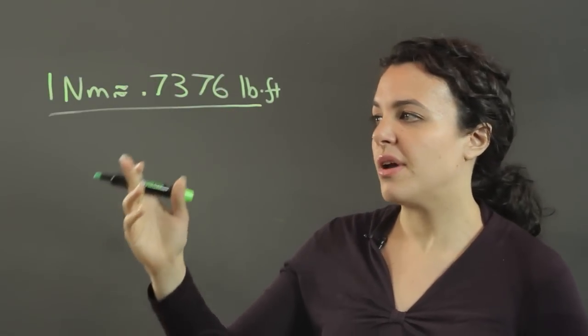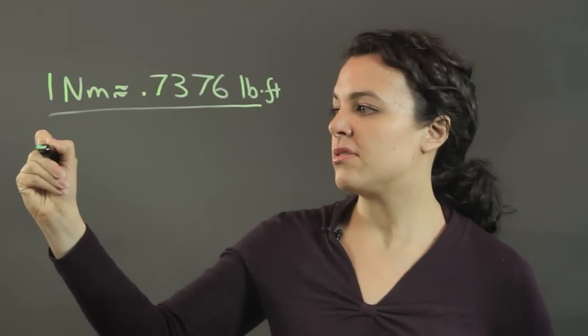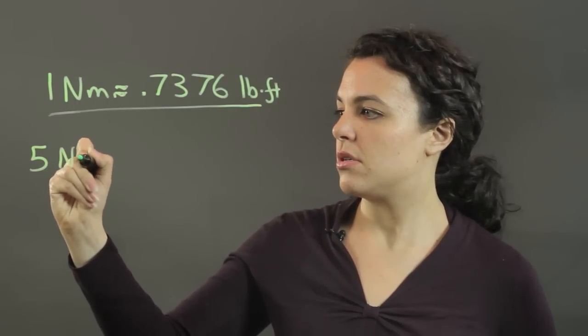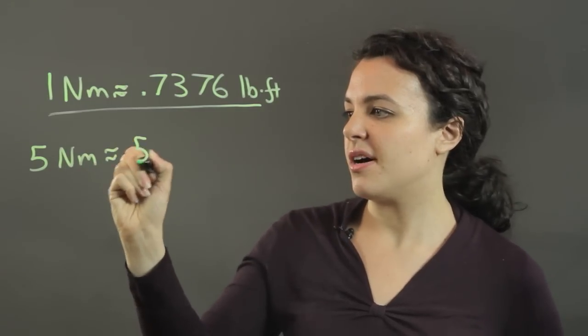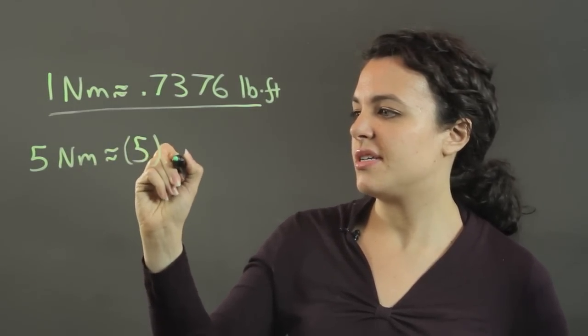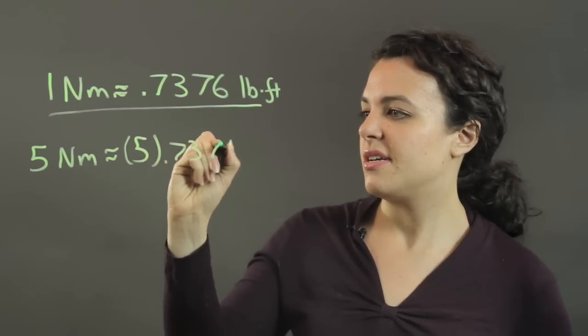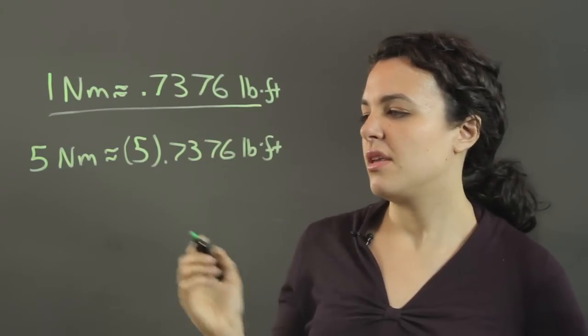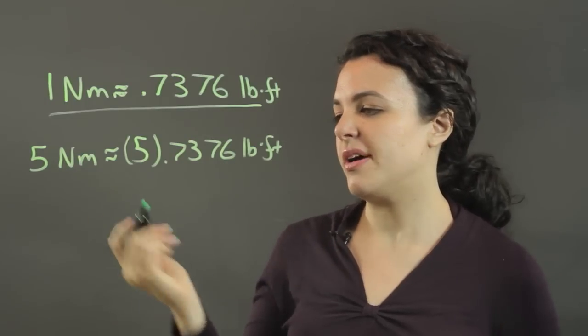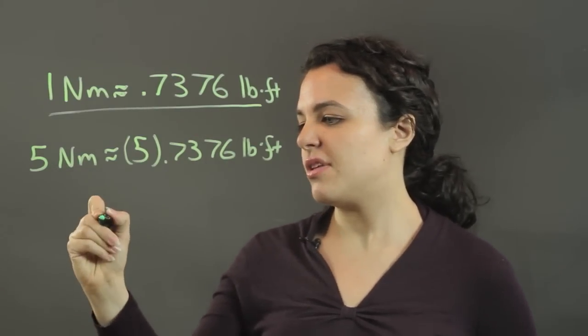So if you have 5 Newton meters, then they're going to be equal to whatever 5 times 0.7376 pound feet are. You just need to multiply this number. I'll go ahead and do that for you.